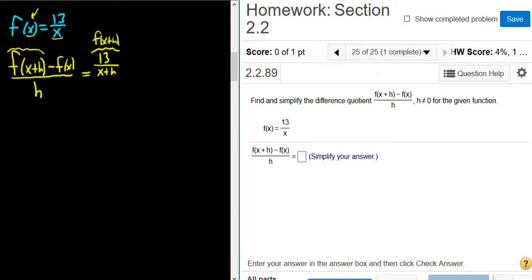All we do is replace all of the x's with x plus h minus f of x. Well, that's what's given in the problem, so 13 over x. And it's all being divided by h.